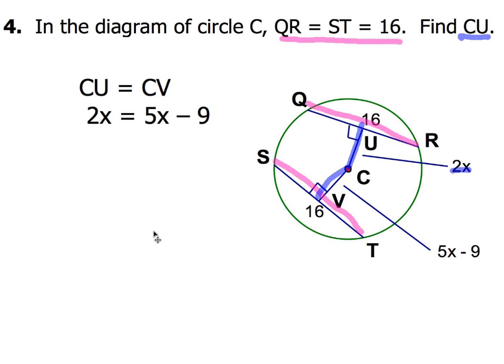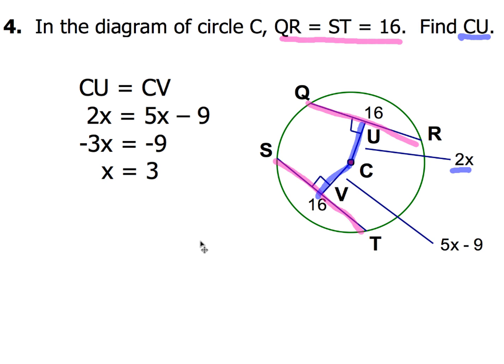2X equals 5X minus 9. Then you go ahead and do some more arithmetic. You get negative 3X equals negative 9 by subtracting 5X on both sides. When you do your division, you end up with getting a value of 3 for X. But you're not done yet. Because what did it ask us to do? The problem asked us to find the value of CU. So use that value of X, plug that into 2X. Make sure that you find the value of CU. Because then, and only then, are you done. So CU equals 2 times 3 equals 6. Take your time, do your arithmetic correctly, and don't forget to read the question. Sometimes a question just asks for X, but in this case we've got to plug in the X to get the value we're looking for.